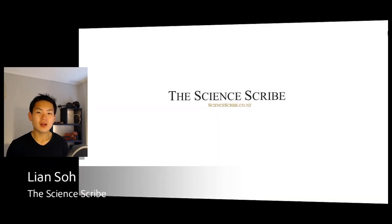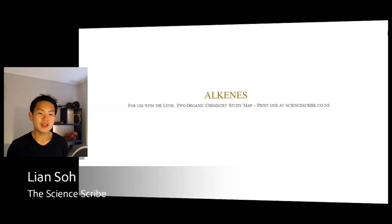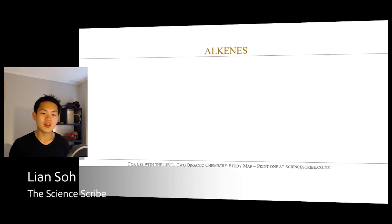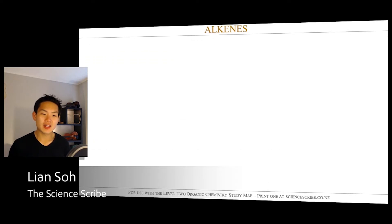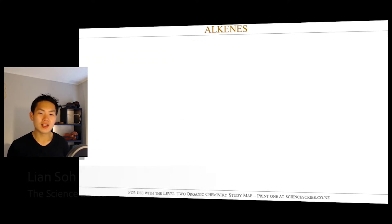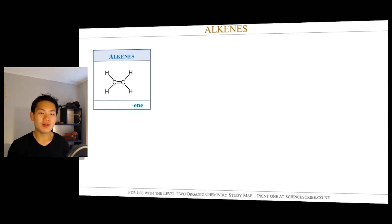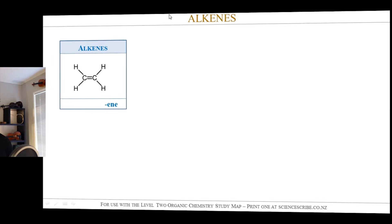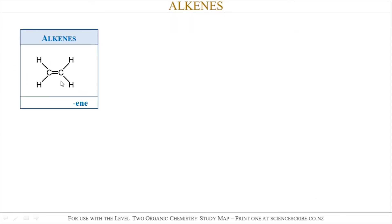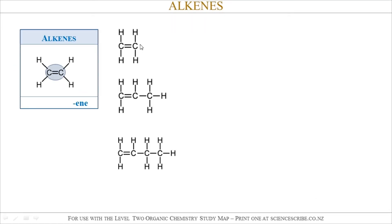In this video, we're going to be looking at alkenes for level 2 organic chemistry. You can download a study map for your organic chemistry exam from my website. Alkenes are all organic molecules which contain a double bond. Some examples of alkenes are shown here.